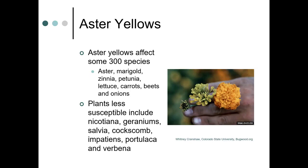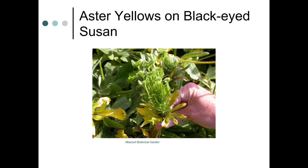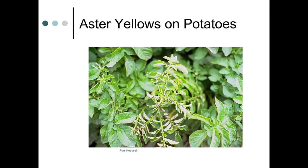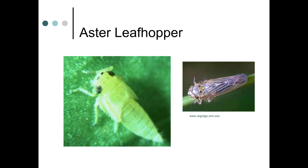Here's what aster yellows looks like on lettuce, here on black-eyed Susan, and here on potatoes. You can also see the aster leafhopper — on the right it has wings, and on the left is a wingless nymph.